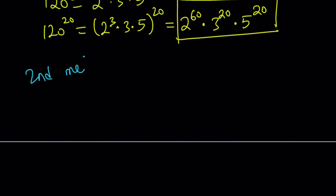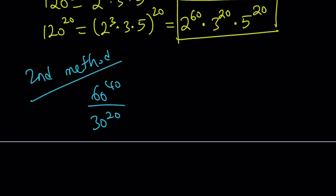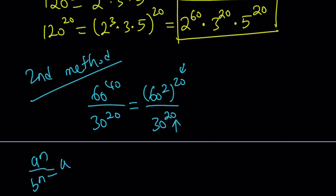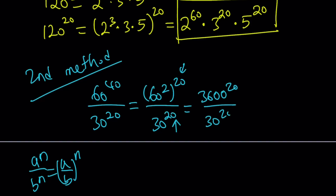Second method. Let's rewrite the original problem: 60 to the power of 40 divided by 30 to the power of 20. For my second method, I'm going to directly work on the powers 40 and 20. Why not write this as 60 squared to the power of 20 divided by 30 to the power of 20? That way I get the same exponent on both. Because if I get something like A to the N divided by B to the N, I can just divide A and B first and then raise to the power N. So 60 squared is 3600, giving 3600 to the power of 20 divided by 30 to the power of 20. These can be divided first and then raised to the 20th power. 3600 divided by 30 is 120, and that's raised to the power of 20.